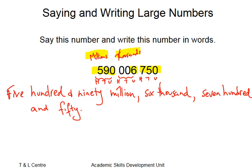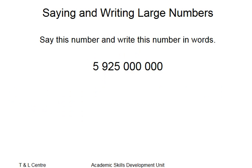Moving on to our next example. This number contains a lot of zeros, but it's actually going to be easier rather than more difficult to do. So once again, this set of three numbers here represents our thousands, this set of three represents our millions, and this one lonely digit, which is part of a set of three, is billions.